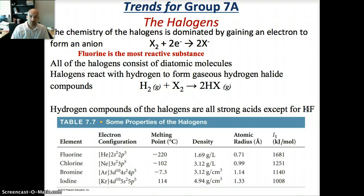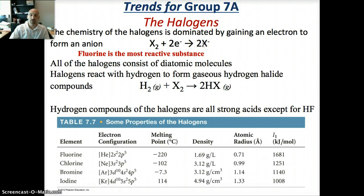The halogens are a special class of elements because they have highly negative electron affinities — they want to gain an electron. All halogens exist as diatomic molecules, so they have to react to gain two electrons, one for each atom. That's why X2 reacts with two electrons and each becomes the X minus ion. Halogens will also react with hydrogen to form a gaseous hydrogen halide compound, which you should know as a common reaction.